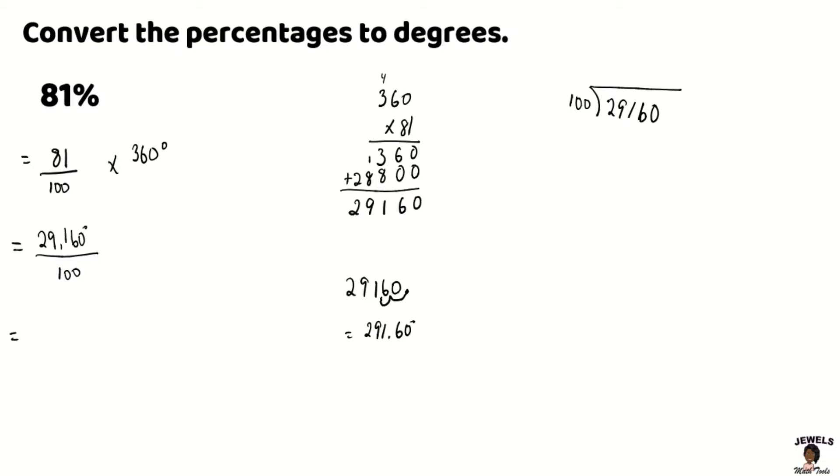So let's start here. So we know that 100 can't divide into 2 because it's less than 100. 100 can't divide into 29 again because it's less than 100. So we're going to divide 100 into 291, which will go twice. 2 times 100 is 200. 200 subtracted from 291 will leave us with 91. We're going to bring down our 6. 100 goes into 916, 9 times. 9 times 100 will be 900. 916 subtract 900 will equal to 16.